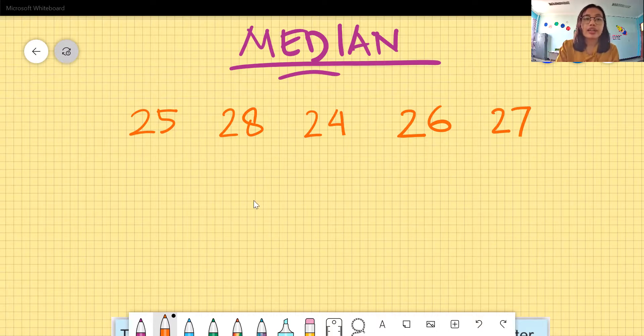I have the numbers 25, 28, 24, 26, and 27. And then I want to find the median of this data set. So we know median is the middle data or the middle value of this set of data. Jadi median itu adalah nilai tengah dari bilangan yang telah terurut. So let's see. This is 28 and then 25 and then 28, 24. Jadi ini belum berurutan ya.